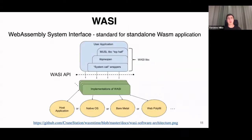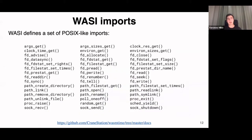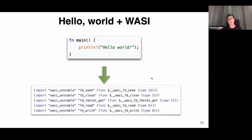WASI stands for WebAssembly System Interface. It is a standard of imports for WebAssembly applications, defining about 50 POSIX-like imports. The main feature of these imports is to provide a standard way to operate with the external world — with the operating system or browser, for example.